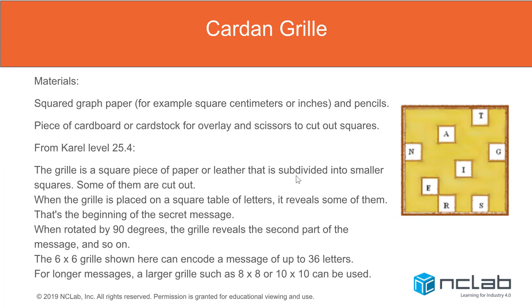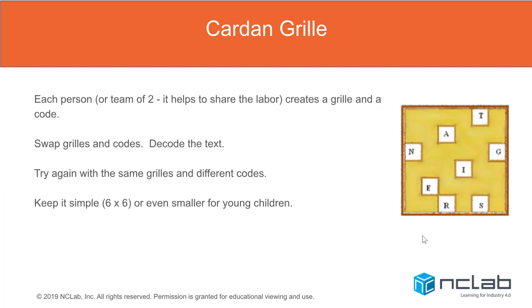The other example is the card and grill, which is in Carroll. You just need squared paper with large squares, some pencils, and a piece of cardboard or card stock for an overlay — something not too hard to cut but opaque — and sharp scissors to cut out the squares. If you want, you can point participants to Carroll level 25.4. You can do it as teams of two or as partners: create a grill and a code, swap them, and decode the text. Try with the same grill and different codes to practice the method.